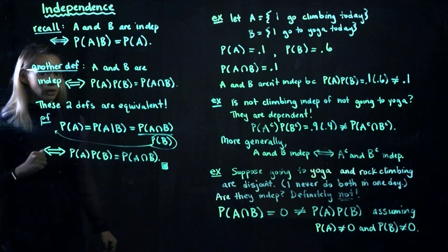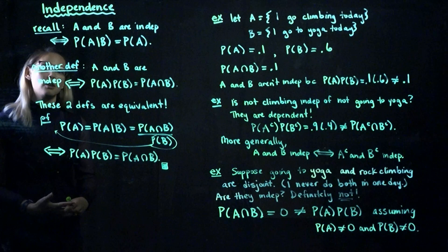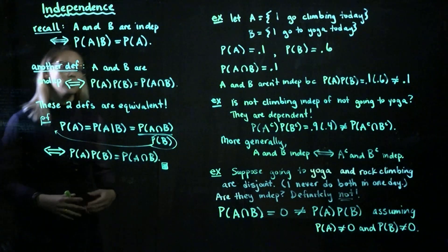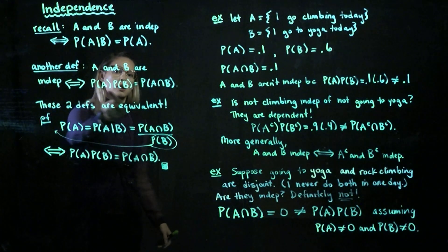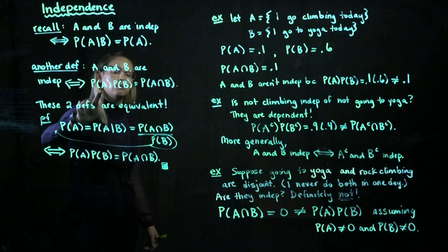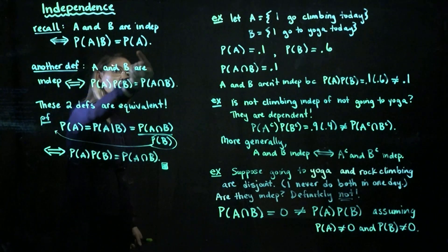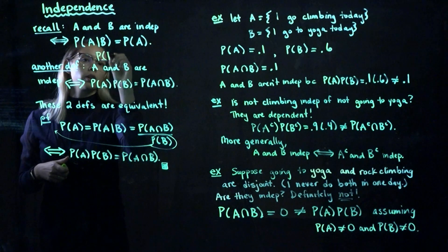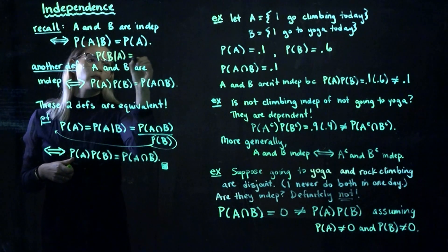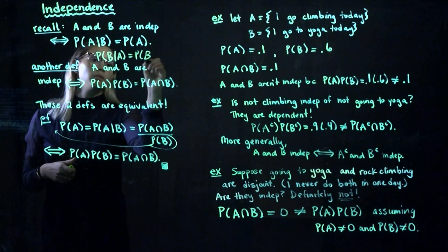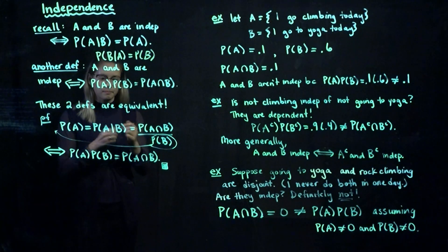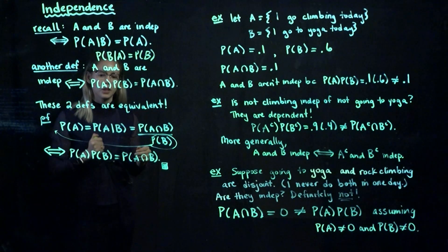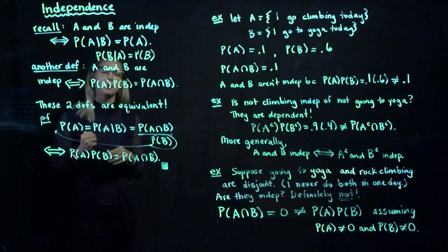In other words, these two definitions are equivalent. So in the future, if you're checking whether two events are independent, you can check whether this equality holds, or you could check whether this equality holds, or of course you could check whether this equality holds. Let's think more about independence by looking at a couple of examples.